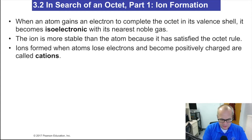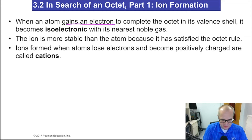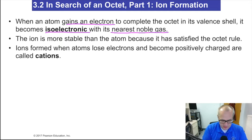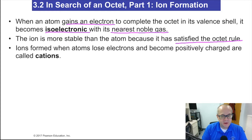When an atom gains an electron to complete the octet in its valence shell, it becomes isoelectric with its nearest noble gas. Keep in mind, the nearest noble gas can be in front of it or behind it. An ion is more stable than an atom because it has a satisfied octet rule. Satisfying the octet rule is kind of the whole point of chemistry.